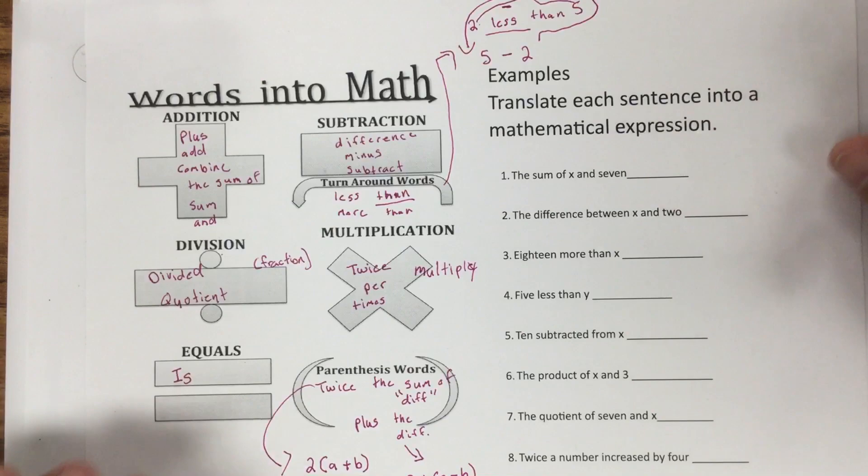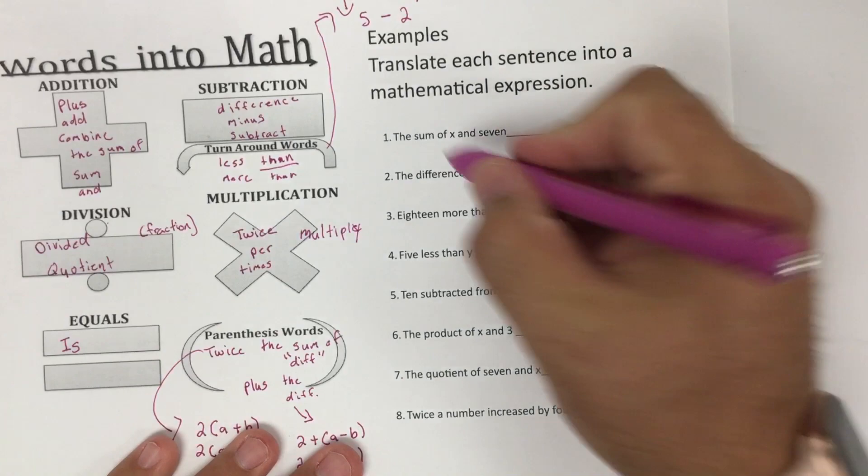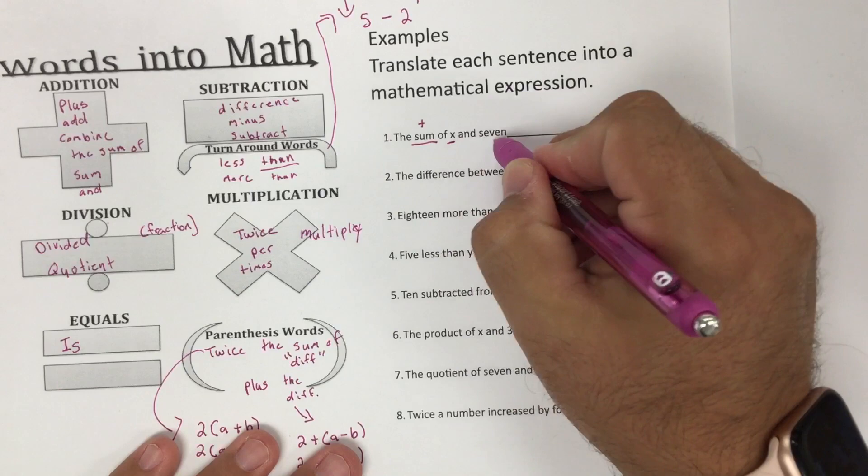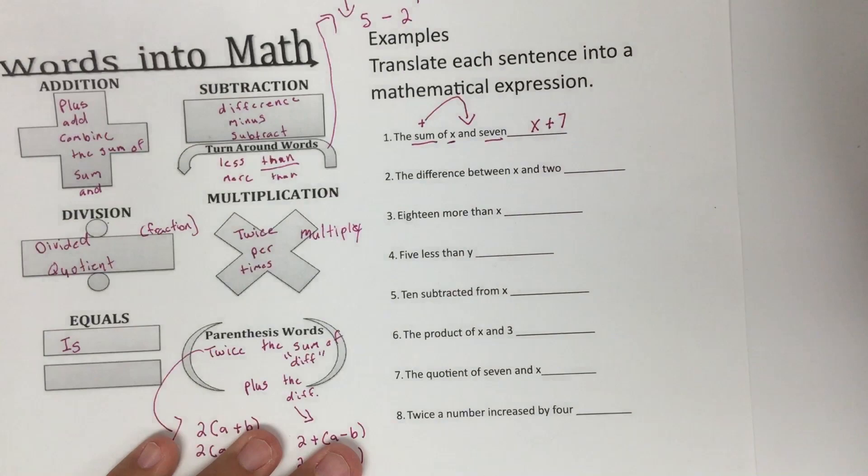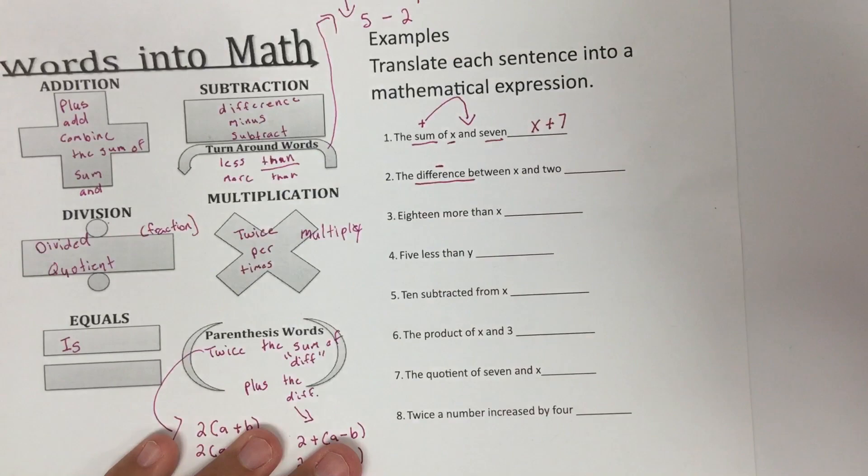So I'm going to go ahead and go here as some examples for word problems. Some keywords: the sum, that means I'm going to add, of X and seven. So X and seven. Notice I'm underlining key parts. The plus goes where the and is. So this is going to be X plus seven.